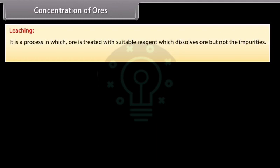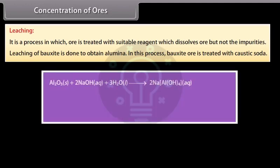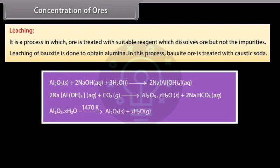Leaching. It is a process in which ore is treated with suitable reagent which dissolves the ore but not the impurities. Leaching of bauxite is done to obtain alumina. In this process, bauxite ore is treated with caustic soda. Al2O3 dissolves in concentrated solution leaving behind impurities. The aluminate in solution is neutralized by passing CO2 gas and hydrated Al2O3 is precipitated. The precipitate of Al2O3 is filtered, dried and finally heated to about 1470 Kelvin to obtain pure Al2O3.